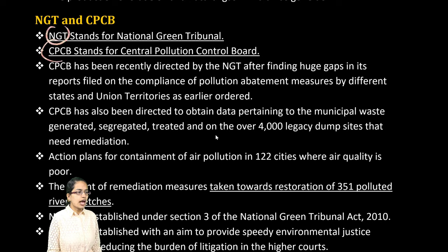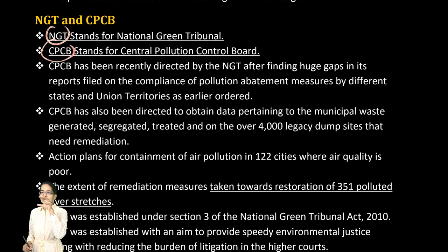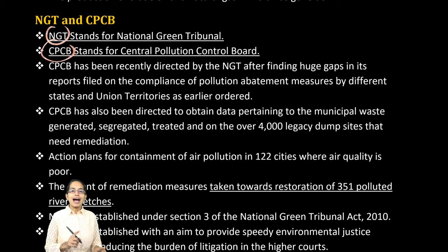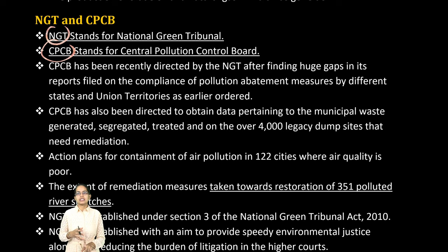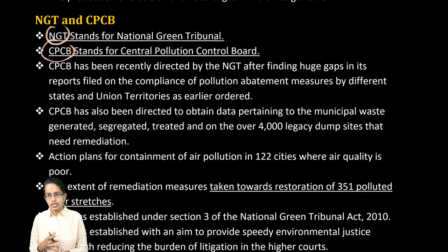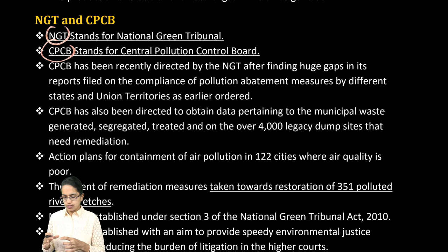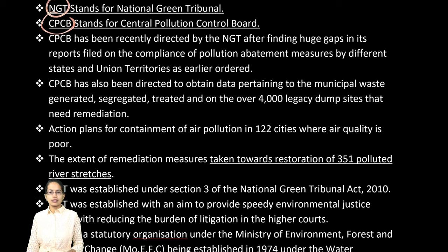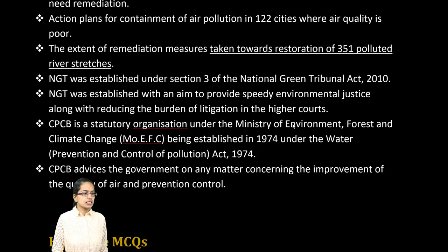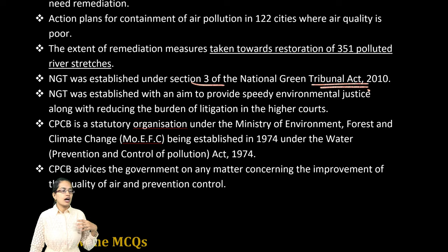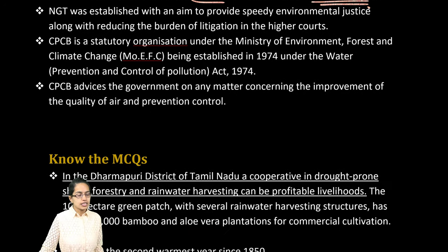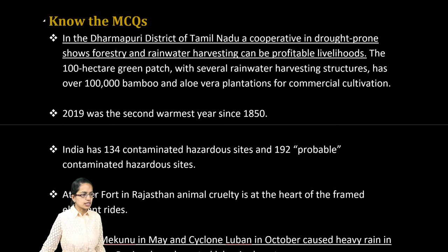Regarding the difference between the NGT and the Central Pollution Control Board: the CPCB has been directed by the National Green Tribunal to find gaps in compliance of pollution abatement, covering not only a few states but also Union territories. This includes polluted river stretches and deteriorating air quality in major metropolitan cities. Section 3 of the NGT is important — it covers speedy environmental justice and establishing a statutory organization under the Ministry of Environment, Forests and Climate Change.